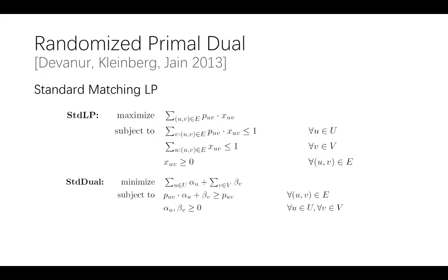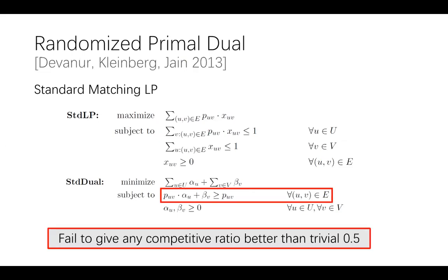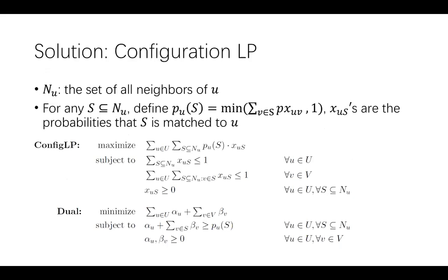In previous work using this framework, they all consider a standard matching LP. The standard LP takes the decision variable X_UV on each edge UV, and accordingly there is a dual constraint on each edge. However, we find that it fails to give any competitive ratio better than the trivial 0.5. Our solution is to use the configuration LP as a benchmark. Instead of taking variables on edges, the configuration LP takes a decision variable X_US on each offline vertex U and subset of its neighbors S, to represent the probability that S is matched to U. This change of decision variables leads to a change of dual constraints, allowing for implicit amortization among vertices in S.